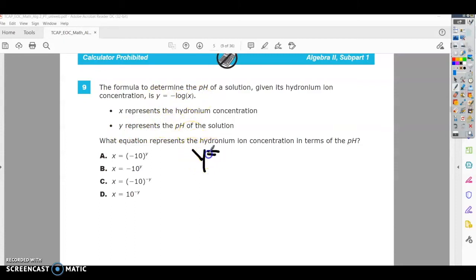You've got Y equals negative log of X. The first thing you want to do is divide both sides by negative 1. So we're going to have negative Y equals log of X.